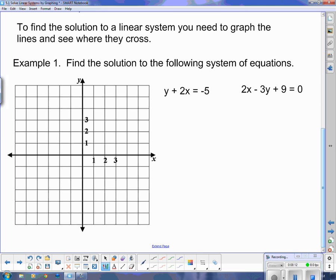So here in example one, it says find the solution to the following system of equations. Well, we've got to graph them first. So I have to rearrange into slope y-intercept form because neither of these are in slope y-intercept form. This one's going to be easy, though, because I have to get the y by itself, and the only thing that's stopping y from being by itself is this positive 2x. So I need to subtract 2x on both sides. And then I have y equals negative 5 minus 2x.